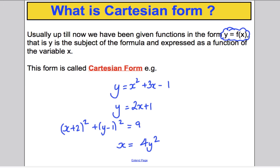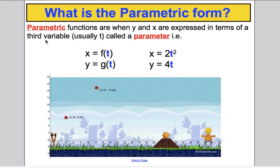Let's compare this to parametric form. Parametric functions are functions when the y and the x coordinates are expressed in terms of a third variable and we usually use t. And that t is called a parameter. So x is some function of t and y is some other function of t. For example, here is a set of parametric equations: x is 2t squared and y is 4t.